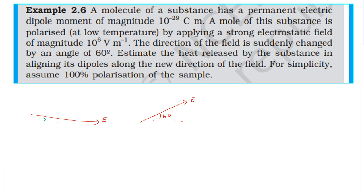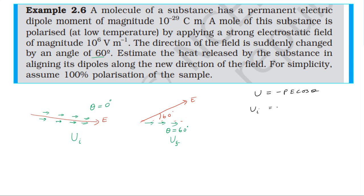The dipole moment is initially aligned along the electric field direction. The direction of the field suddenly changes by 60 degrees. The initial angle between the dipole moment and the electric field is zero. The potential energy of the dipole placed in an electric field is given by U equals minus p·E cos theta. For the initial state, cos 0 equals 1.